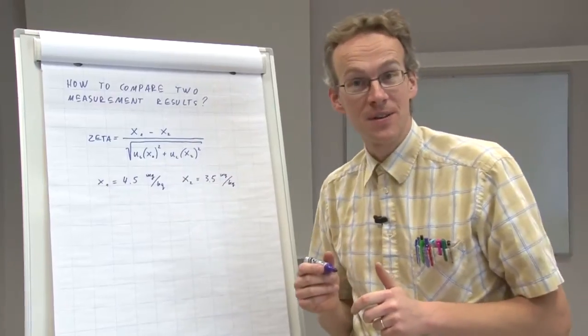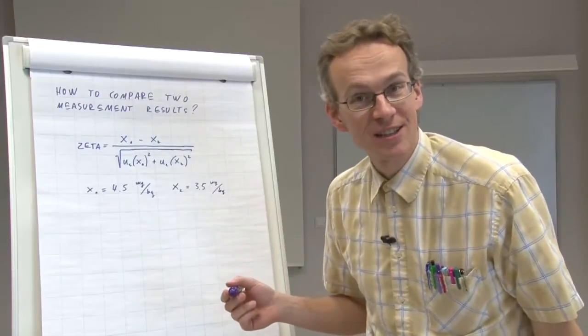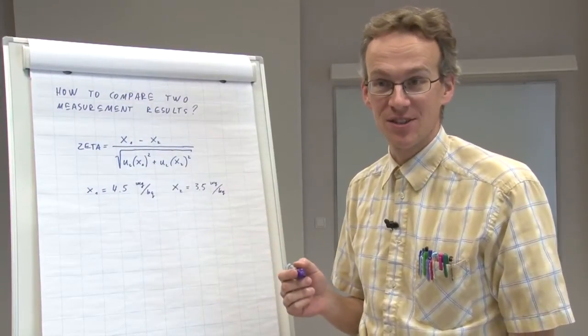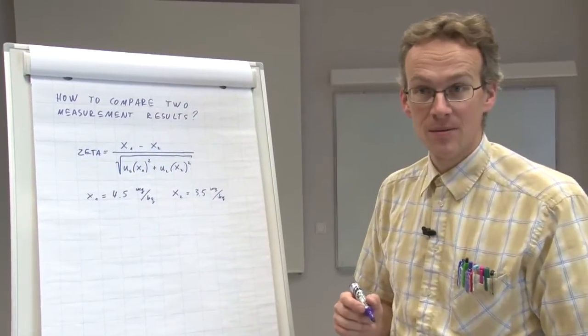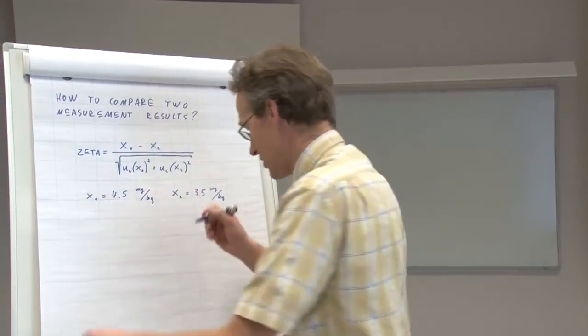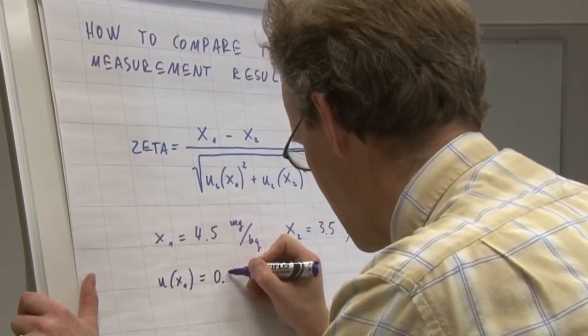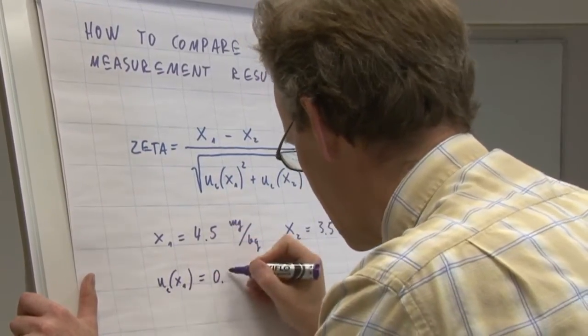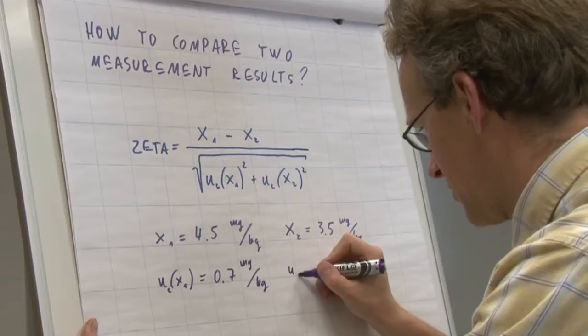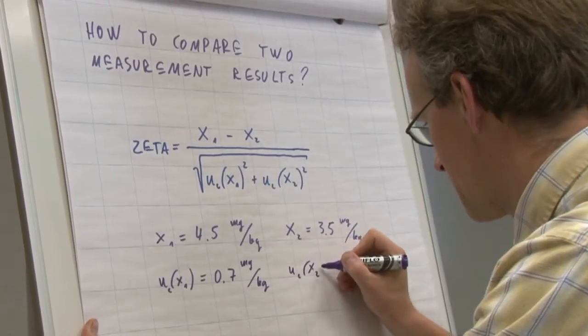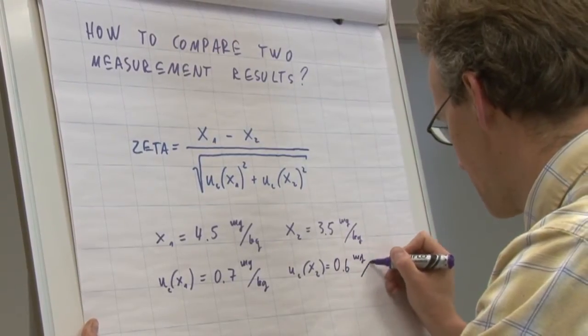Seemingly they are very different, but if these are, let's say, some pesticide determination or other kind of trace analysis results, they usually have quite high uncertainty. Let's see what happens if they have some quite realistic uncertainties: uc(x1) equals 0.7 milligrams per kilogram and uc(x2) equals 0.6 milligrams per kilogram.